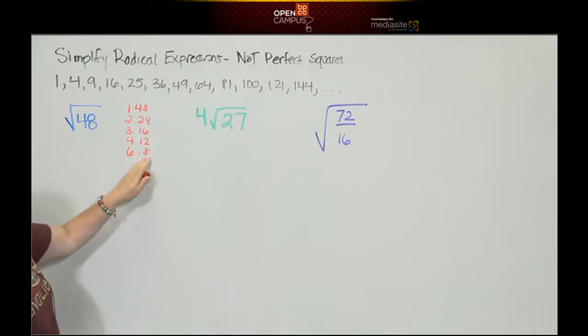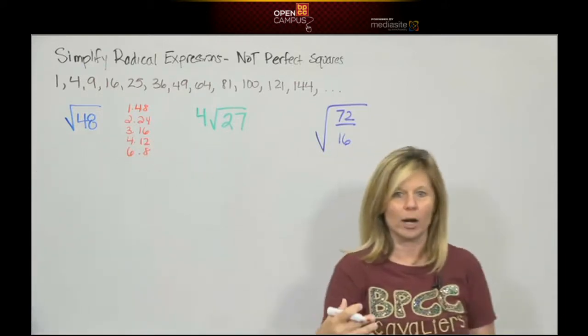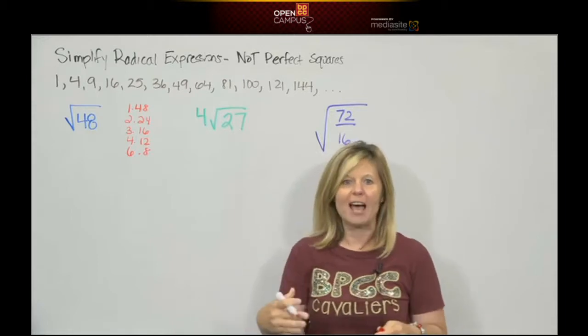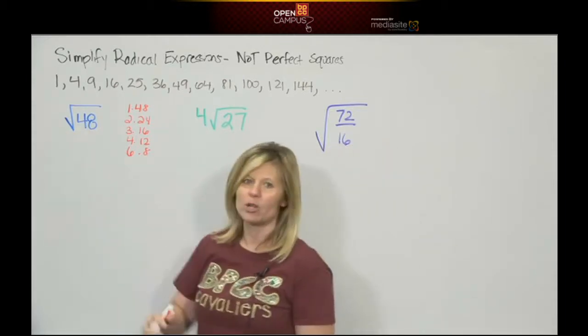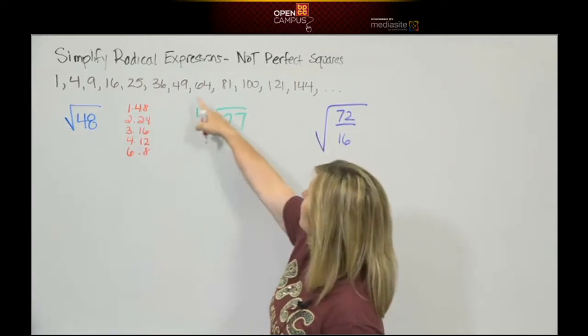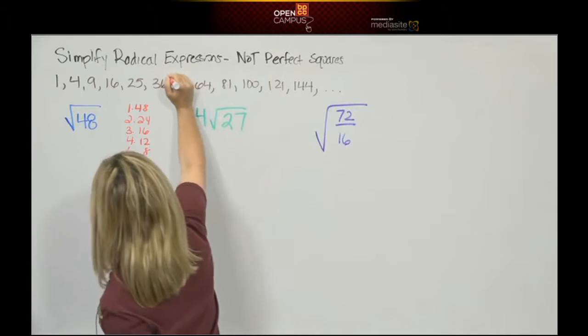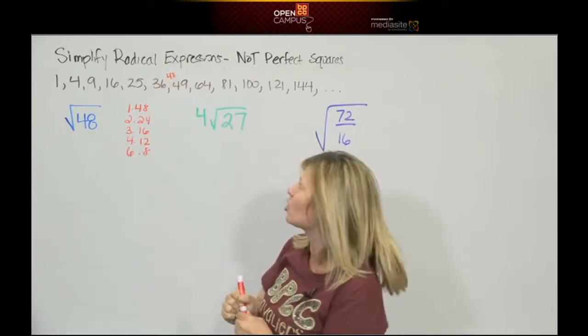It's 6 times 8. These are all the factors of 48. But you just can't choose any one. The job is to find the factor that has the biggest perfect square. I know 48 is right here between 36 and 49 and I start from the back.